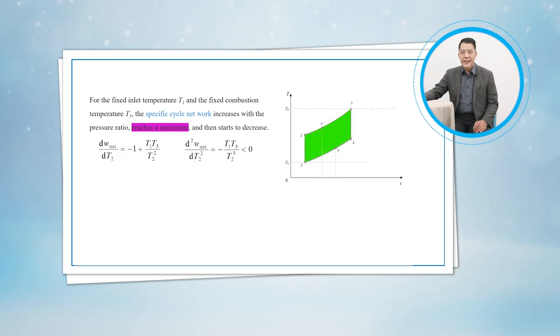Substituting the state temperatures and following the way we've used before, the derivatives are. We find there exists indeed maximum-specific cycle network. Setting the first derivative to zero, the optimum end compression temperature is.